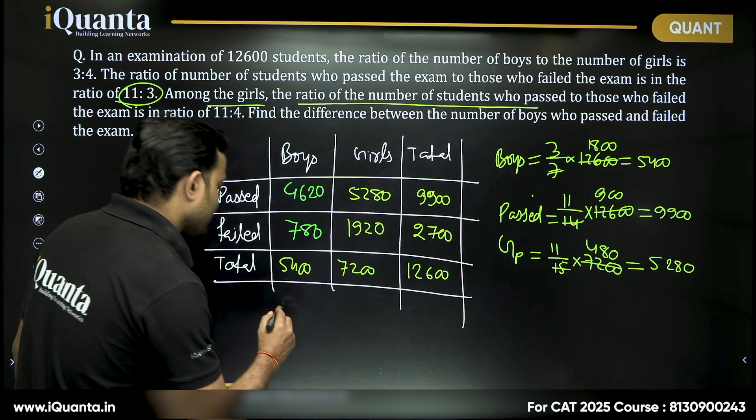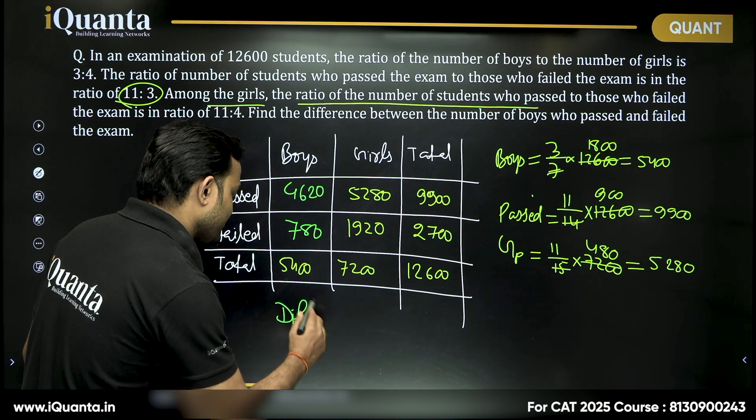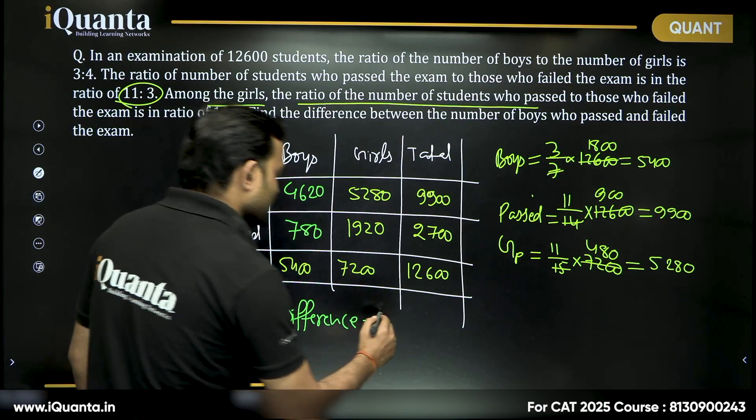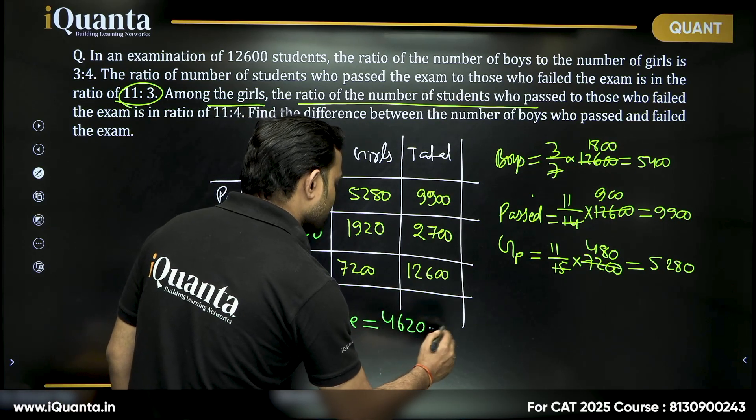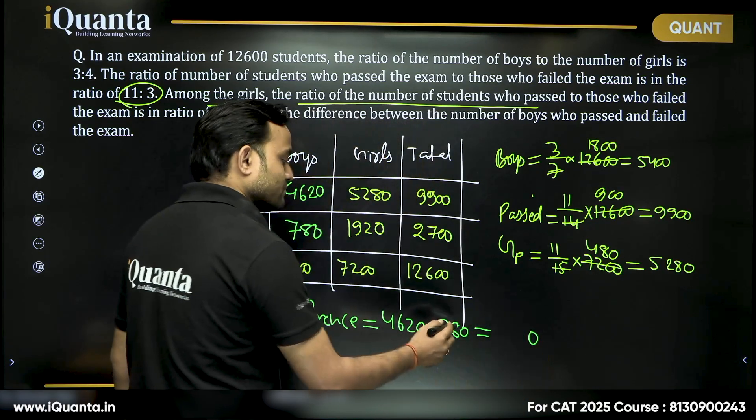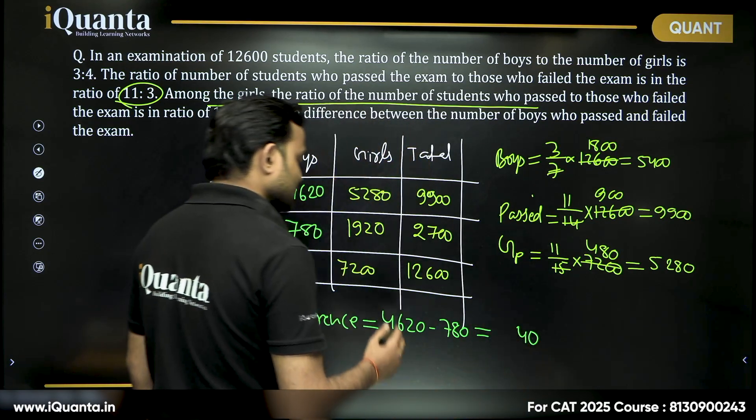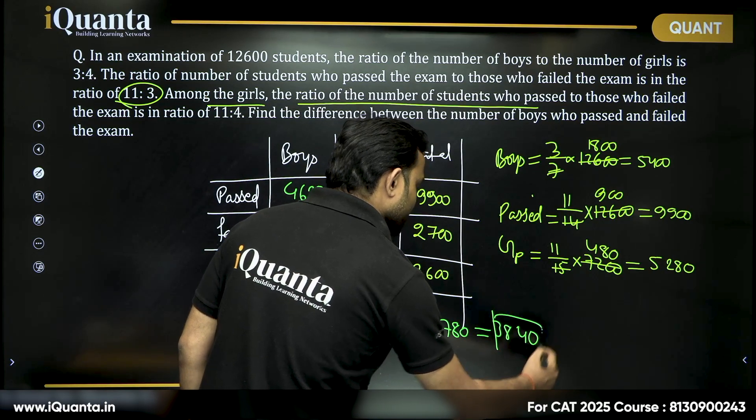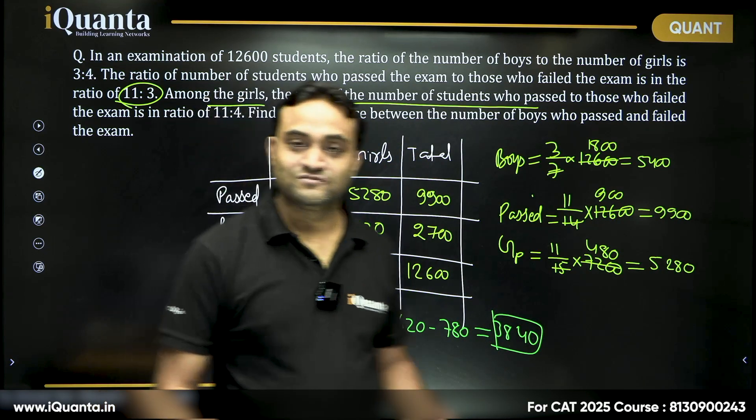So the difference that we are looking for, the difference is equal to 4,620 minus 780, which will be equal to 0, 12 minus 8 is 4, then 45 minus 7 is 38, 3,840. That is your answer.